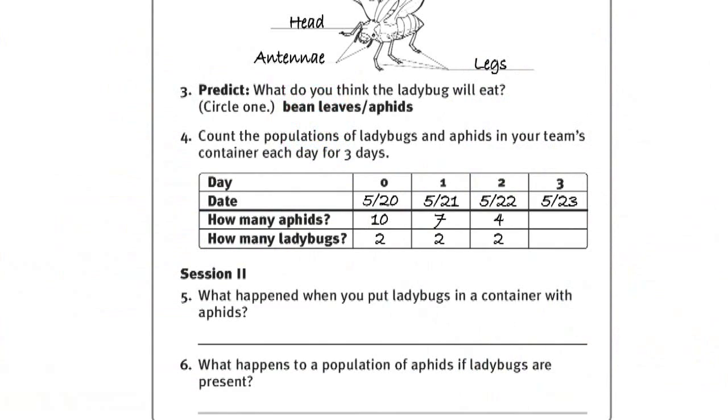To conclude session one, every day for three days, have students examine the containers. Count the number of aphids in each and look for any signs that the ladybugs have been eating the leaves. Make sure students record this information in the population chart on the activity sheet.